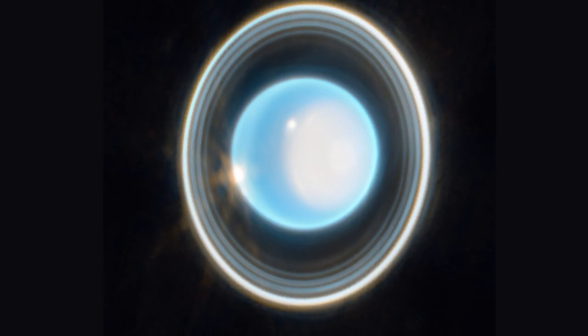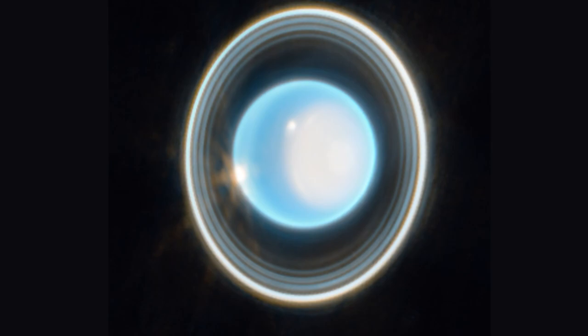NASA's James Webb Space Telescope, JWST, has shared its first look at Uranus, revealing invisible glowing rings around the ice giant and its 27 moons.